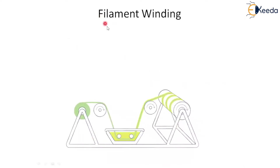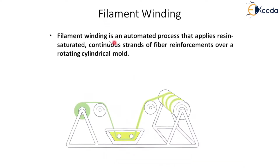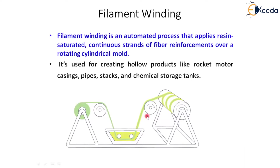The next method is filament winding, which is an automated process. The rollers move automatically with the help of powered rollers and apply resin-saturated continuous strands of fiber reinforcement over a rotating cylindrical mold. Continuous strands are required and the fiber is reinforced continuously over the rotating cylindrical mold. It is generally used for hollow products like rocket motors, castings, pipes, stacks, and chemical storage tanks.